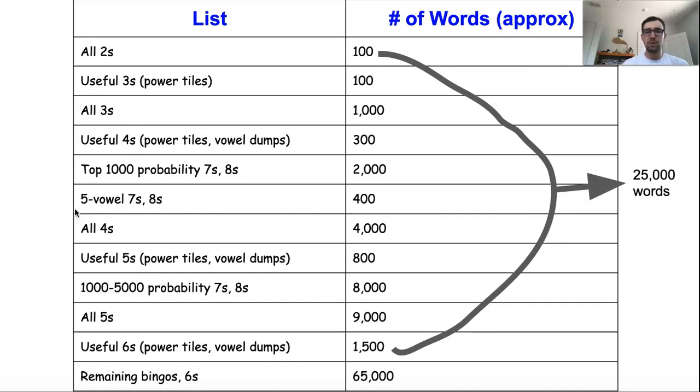Once you've got down some of the most important bingos, then I recommend going back and finishing up all the fours, and then transitioning to some of the most useful five-letter words. Generally, in terms of words that are shorter than bingos, you're not going to be getting a 50-point bonus, so the longer they get, the less useful they become because they're a little bit less likely to actually appear on the board. You're going to see twos and threes happen over and over again, but specific fives don't come up all that often. Some of them come up a lot more often than others, and those are the ones I've sort of labeled the useful fives.